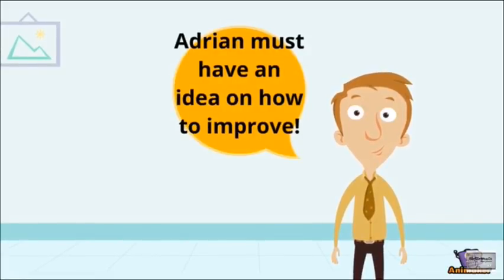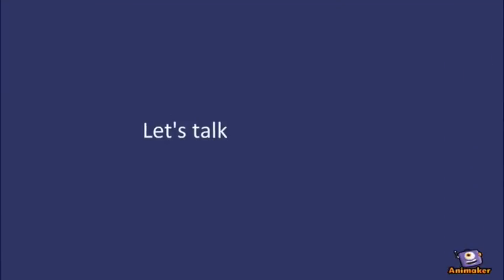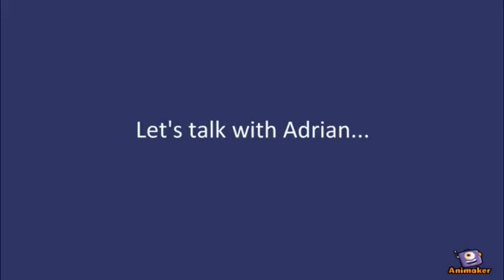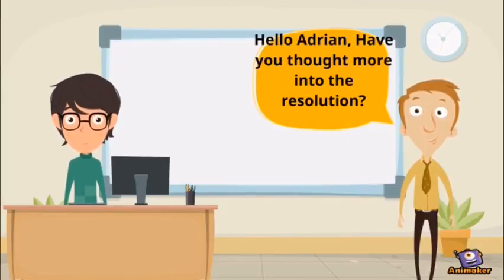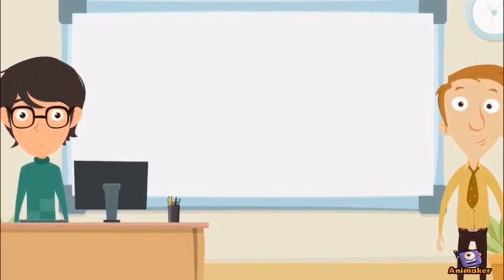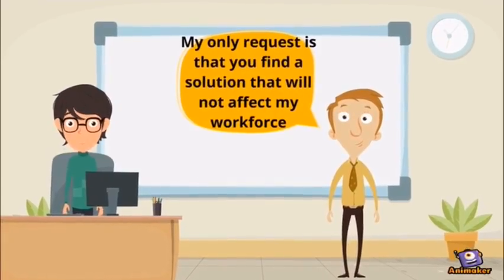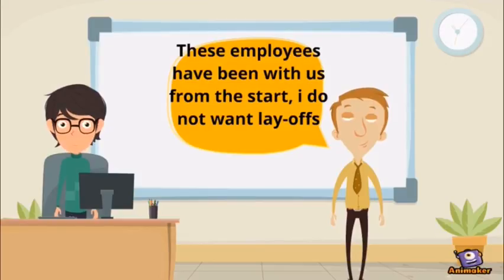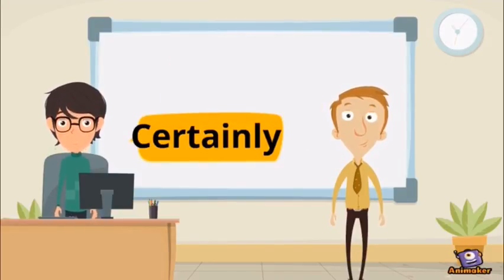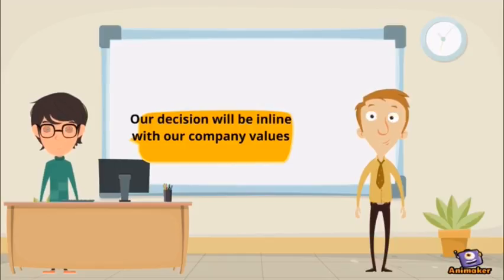Picking up from the last episode, Greg will now meet with Adrian to see what he has come up with. Adrian presents his idea: he believes that a robotic processing system will benefit them greatly, as it will allow them to cut down processing times. Greg's biggest concern about the choice of a solution is how it will affect his workforce. On the next episode, we will see the implementation of the robotic processing system and how it affects the new accounts processing team.